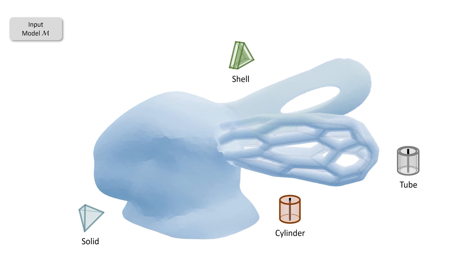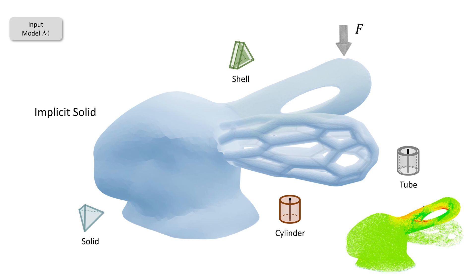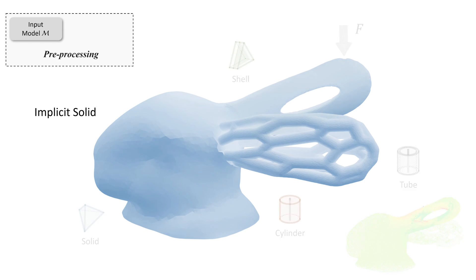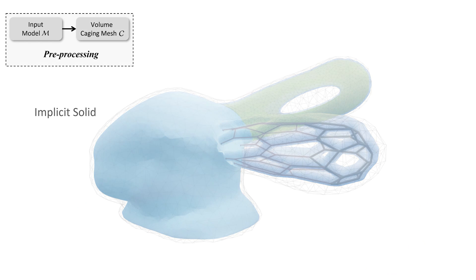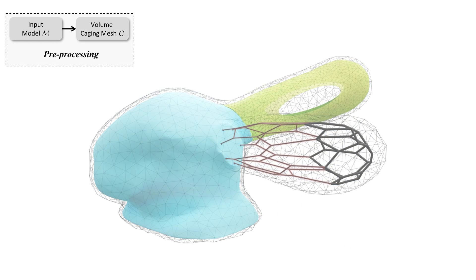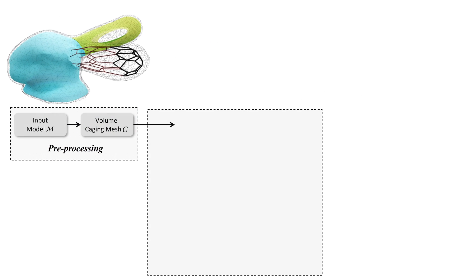During the preprocessing step of our pipeline, different representations are first converted into an implicit solid. Voxel-based finite element analysis is employed to compute the stress field. After that, a volume mesh caging the input solid is generated as an intermediate representation for numerical computing.